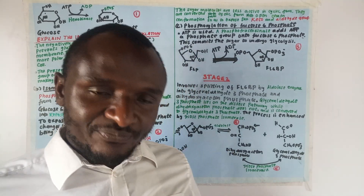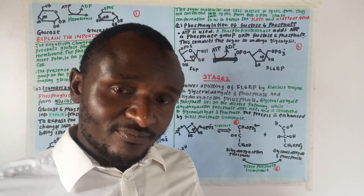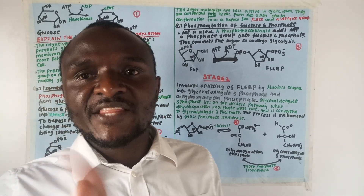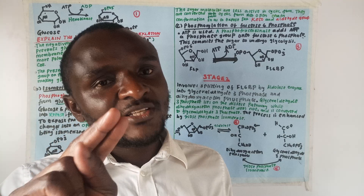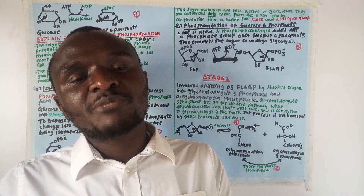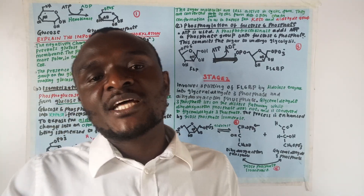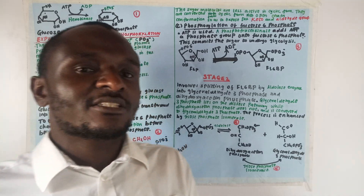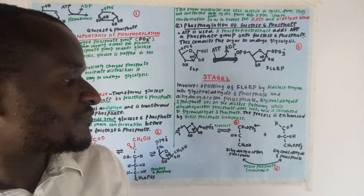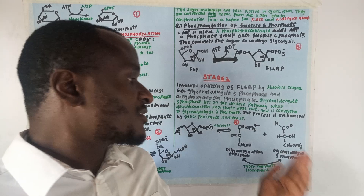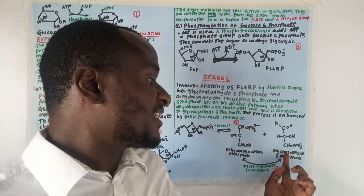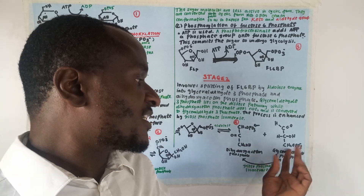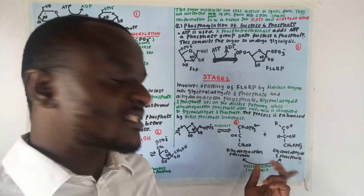At this particular stage, the pathway branches into two, and therefore the rest of the molecules produced will be two — one produced on each branch. This process is facilitated by triose phosphate isomerase, which works on three-carbon sugar molecules.